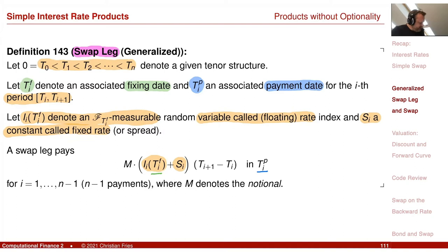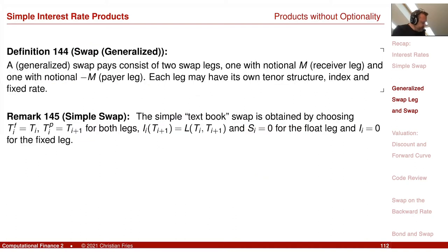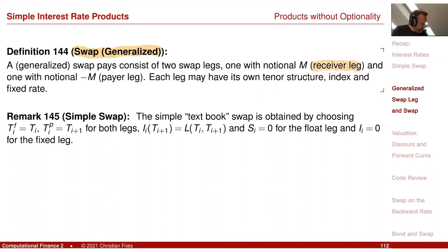Whether I have a floating leg or a fixed leg depends on whether I have the constant set to zero or the index set to zero. So far it doesn't look too complicated. My generalized swap is just the difference of two such legs — one we call the receiver leg and the other the payer leg — with different notionals M and minus M.